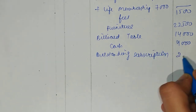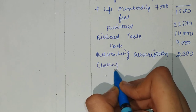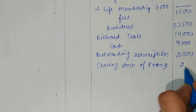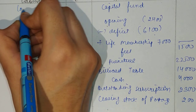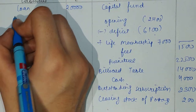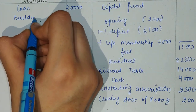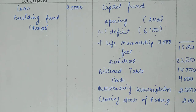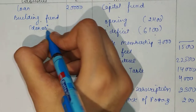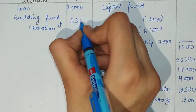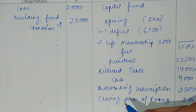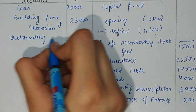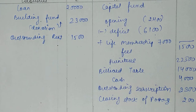Then we have closing stock of postage stamps at $200. Loan included at $23,000. After that, the building fund — which means we have a donation related to the building fund — we received $23,000. The outstanding rent of $1,500 is shown in both the opening and closing balance sheets. So these three things are shown, and the total comes to $44,500 on both sides.